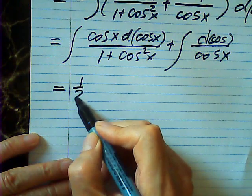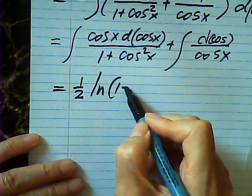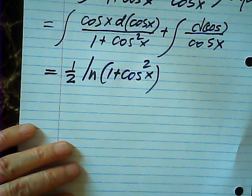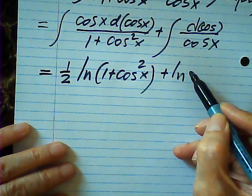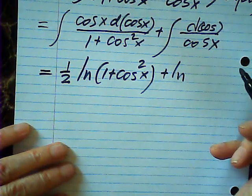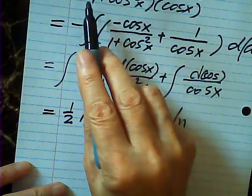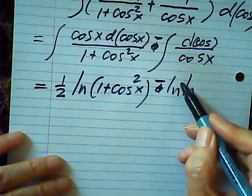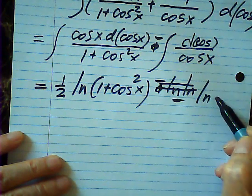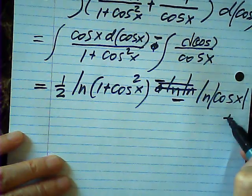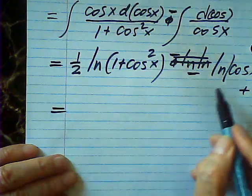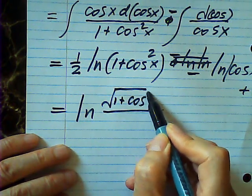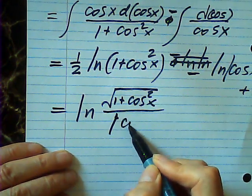So this is one half log of 1 plus cosine squared x. And there's a negative here — negative log cosine x, plus C. Then I combine these two. It becomes log of square root of 1 plus cosine squared x, over cosine x.